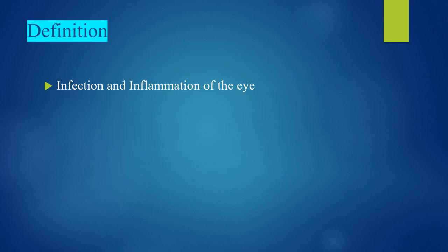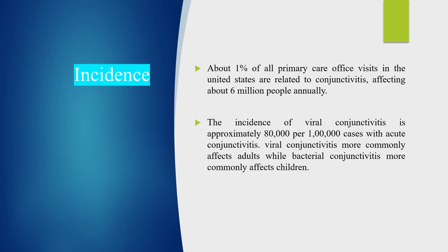Definition: Conjunctivitis is infection and inflammation of the eye. Incidence: About 1% of all primary care office visits in the United States are related to conjunctivitis, affecting about 6 million people annually. The incidence of viral conjunctivitis is approximately 80,000 per 1 lakh cases with acute conjunctivitis.